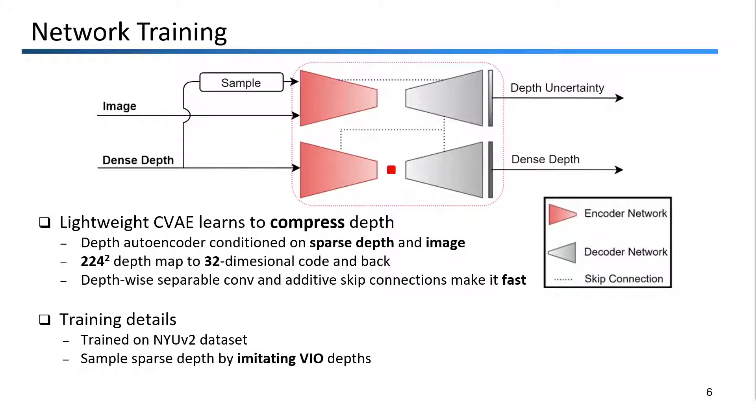We propose an efficient network to learn the mapping from the low-dimensional code. On the top of this figure, you can see a similar-looking UNET-style network from before, which is responsible for predicting the depth uncertainty and multi-scale features. However, this time we are inserting images and the sparse depth from VIO. The variational autoencoder on the bottom of this figure learns to map a full-resolution dense depth map to a small 32-dimensional code vector based on the conditional information from the UNET features. Our network is very fast due to the use of depthwise separable convolutions and additive skip connections.